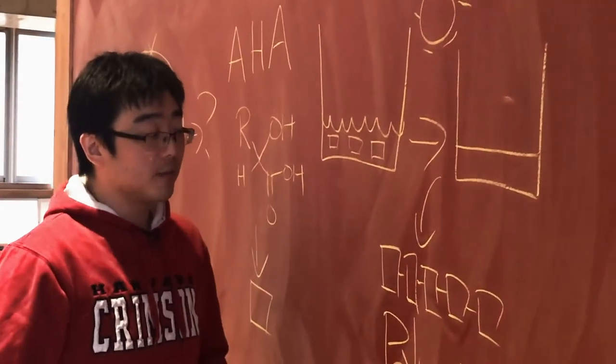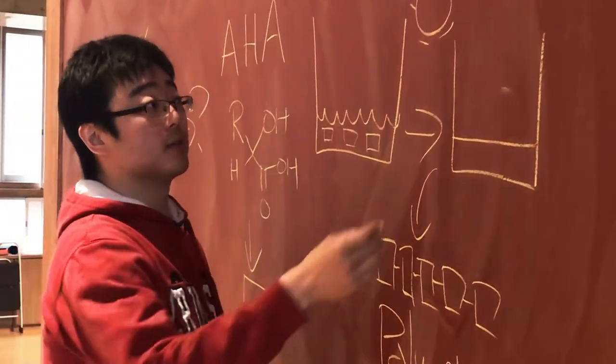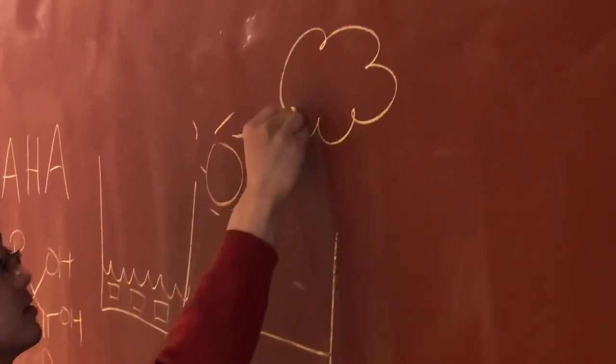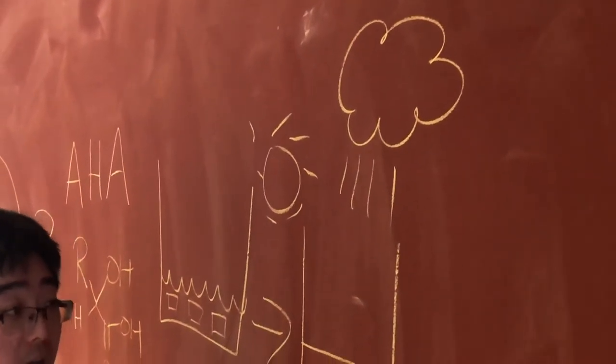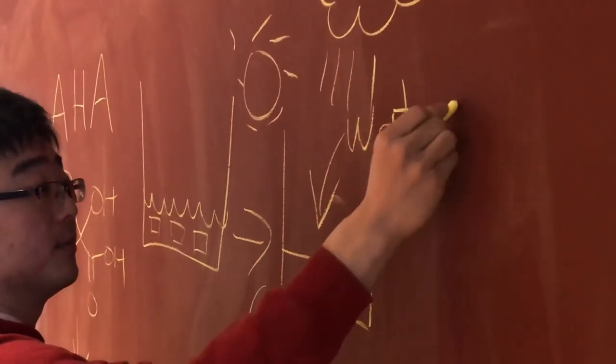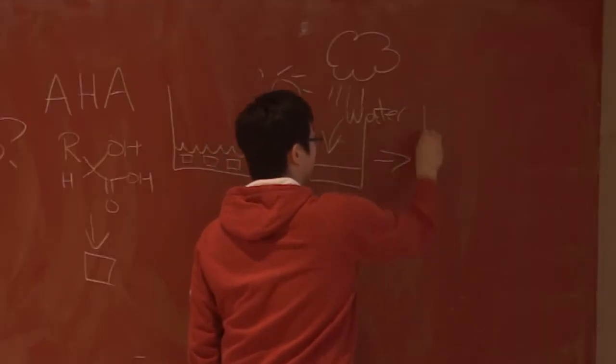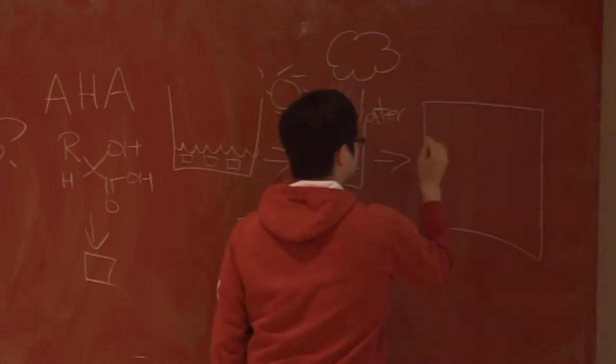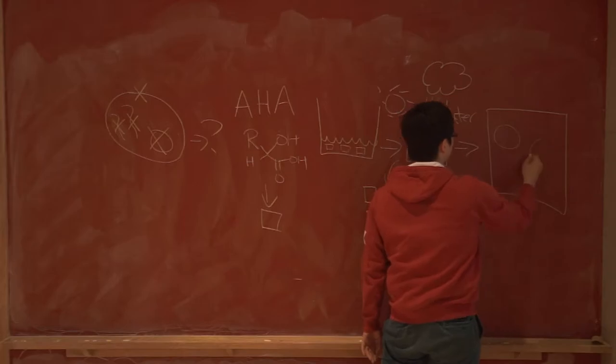And what's great about this system is when for example in this extraterrestrial environment you get some rain and some water goes into this dried gel. What you end up forming is self assemblies of these polyesters that assemble into micro droplets.